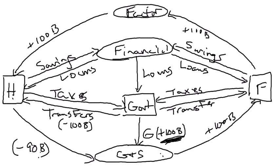Likewise, the government could fund it by raising taxes by $100 billion. The same thing happens: if households are paying an extra $100 billion in taxes, their disposable income falls by $100 billion, so they're going to have to cut consumption spending just like when transfer payments fell. Let's say it decreases consumption by $90 billion — then again, down here in the market for goods and services, that's only going to be an extra $10 billion worth of spending.